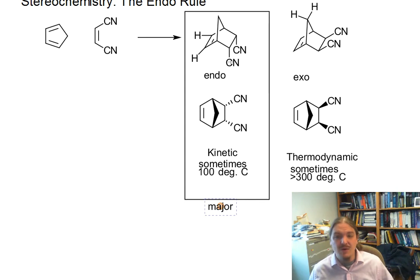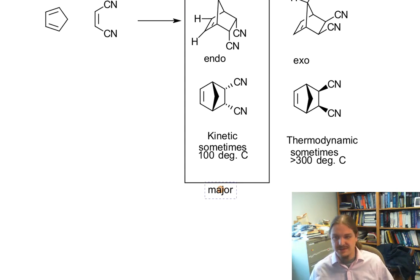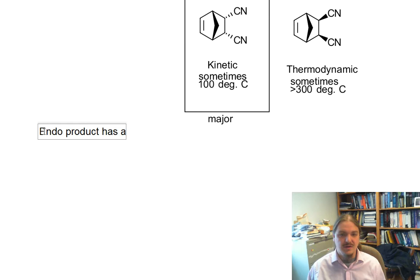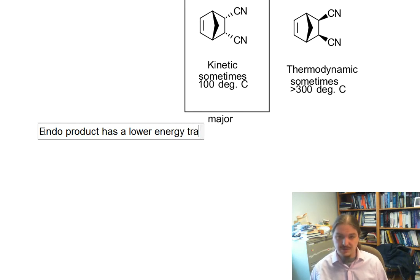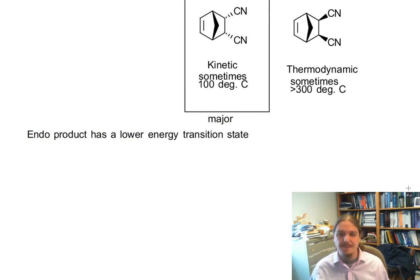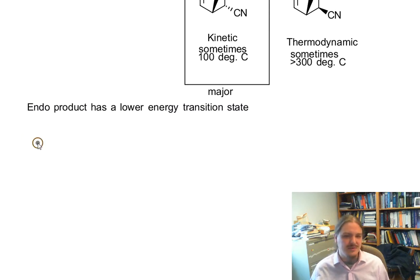Now let's talk about why the endo product is the kinetic product. The kinetic product needs to have a faster reaction, which means the activation energy needs to be lower. So something about the transition state leading to the endo product needs to be more stable or lower energy. We're projecting what we think this transition state looks like, but here we go.